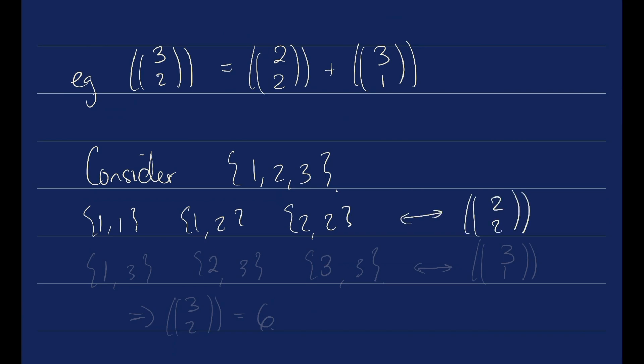Or we can make sure to include the third element and just union with 3 multi-choose 1, which is how many ways to choose a set of size 1. So you can choose 1 or you can choose 2 or you can choose 3. That corresponds to 3 choose 1 and then uniting with 3. Altogether, this tells us that 3 multi-choose 2 is going to be 6.